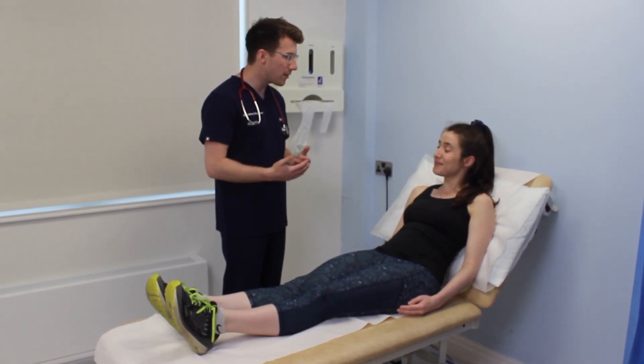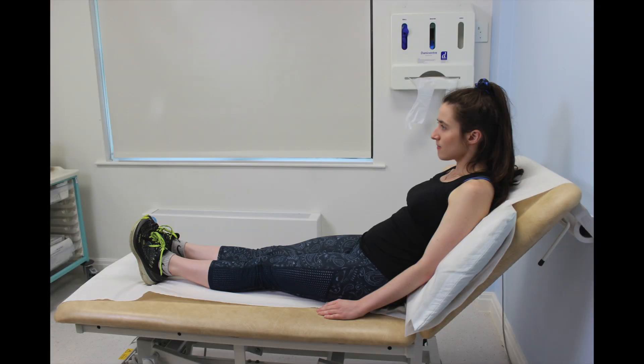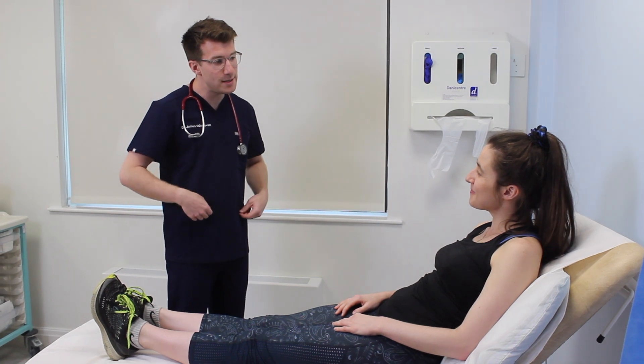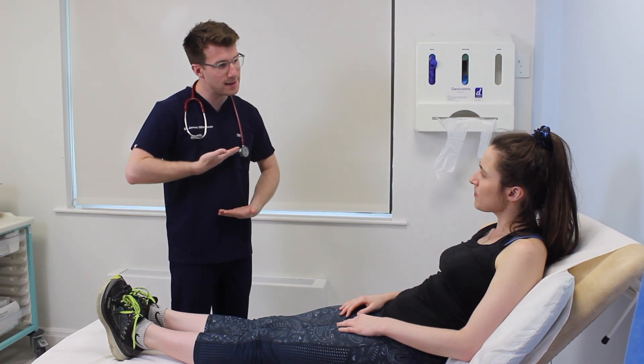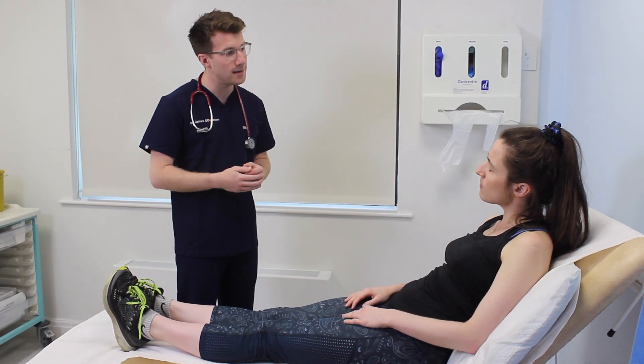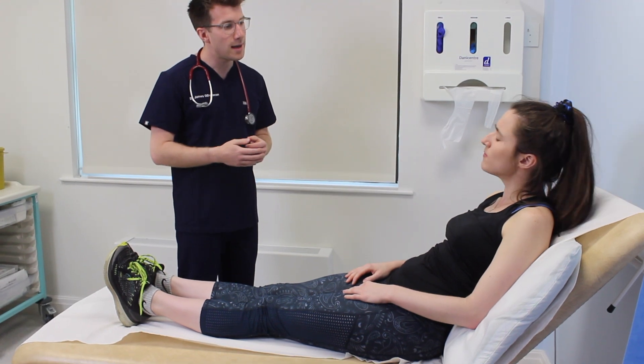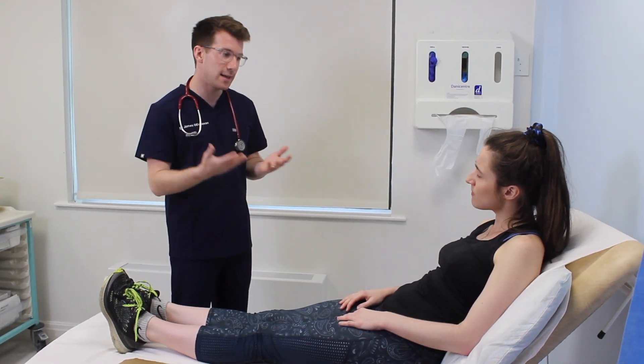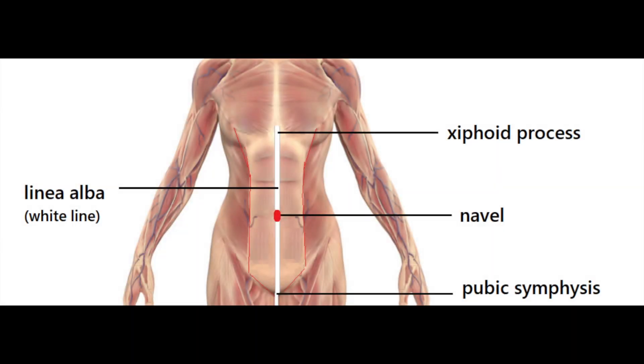For the first part of the examination, set the head of the bed to a 45 degree angle. Start off the main section of the examination with inspection. Explain to the patient that in order to assess their abdomen it's important that you can properly visualize it. This will mean removing clothing to expose the abdomen appropriately. Exposure should be from the xiphisternum to the symphysis pubis.